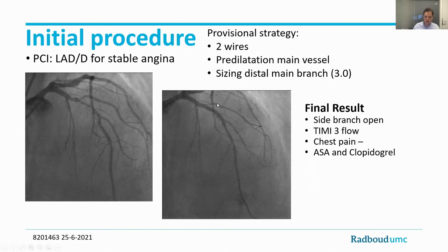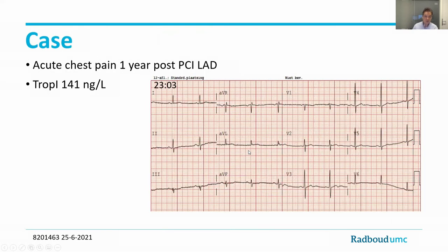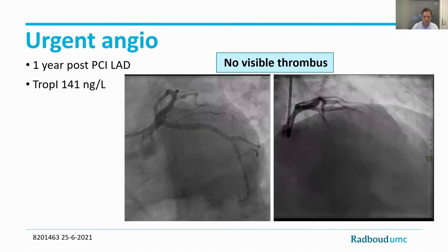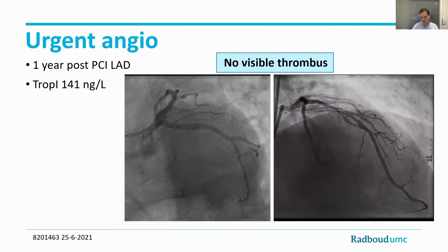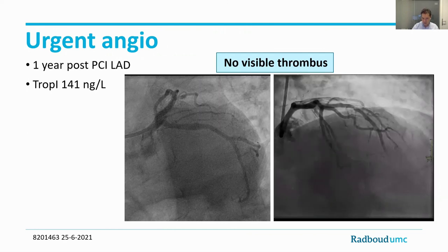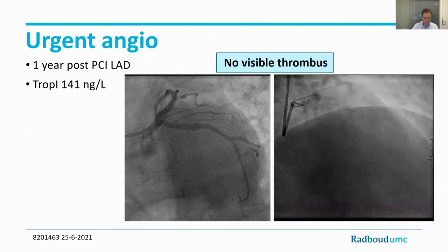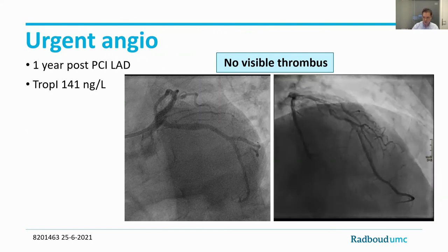In 2020, the patient was treated with provisional strategy using two wires, predilation of the main vessel, and sizing of the distal main branch with a 3.0mm stent crossing over the bifurcation. The result used post-side dilatation with a 5.0×50mm balloon, not crossing into the side branch, giving full expansion of the proximal part. Even though the vessel was pretty large, this did not result in pinching or side branch occlusion — the side branch was sufficiently open with TIMI reflow, no chest pain, no ECG changes. The patient was treated with aspirin and clopidogrel for one year. After one year, the patient stopped clopidogrel, but a few days later he presented with chest pain.